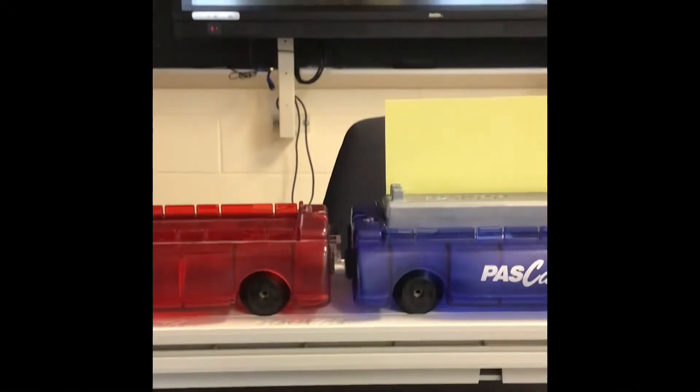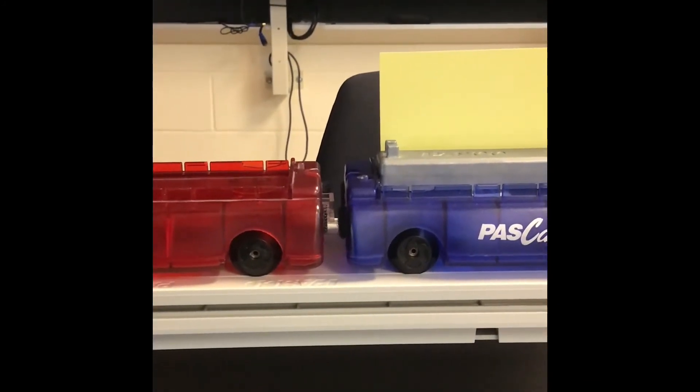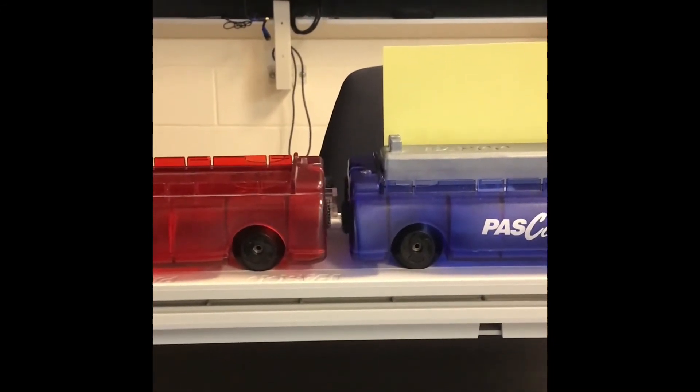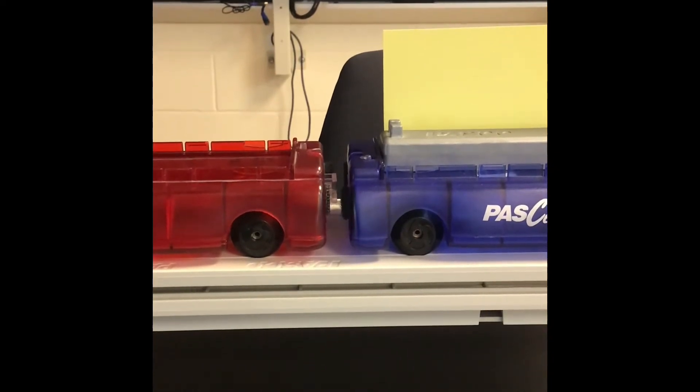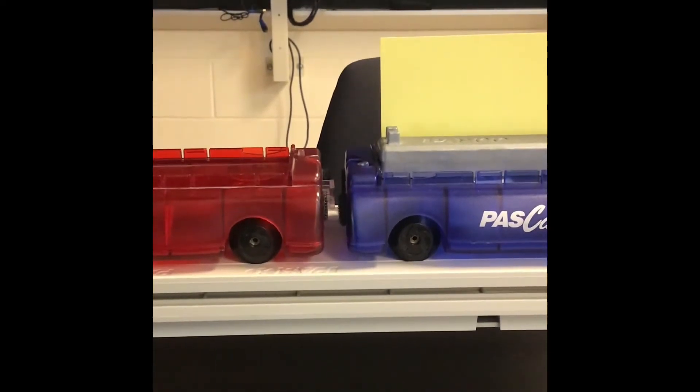All right, next we're going to look at an explosion type of collision, so they're going to start from rest. The red cart, a little less massive than the blue cart, so we should expect it to travel to the left with a higher velocity. And the blue cart is going to travel to the right with a lower velocity, because the momentum in each direction has to be equal to each other.